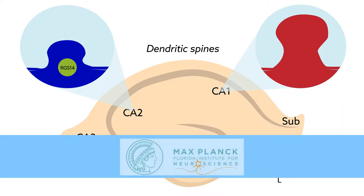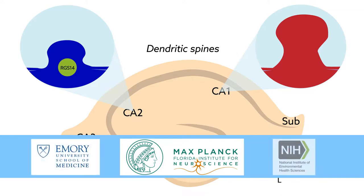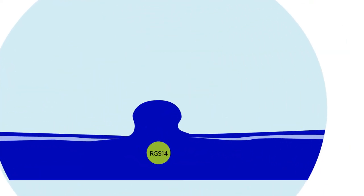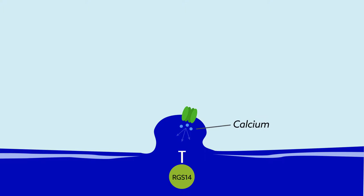Now, researchers at the Max Planck Institute for Neuroscience in Florida, collaborating with teams at Emory University and the National Institute of Environmental Health Sciences, have uncovered a unique role for RGS14 in inhibiting calcium signaling in CA2 neurons, providing new insights into how plasticity is regulated.